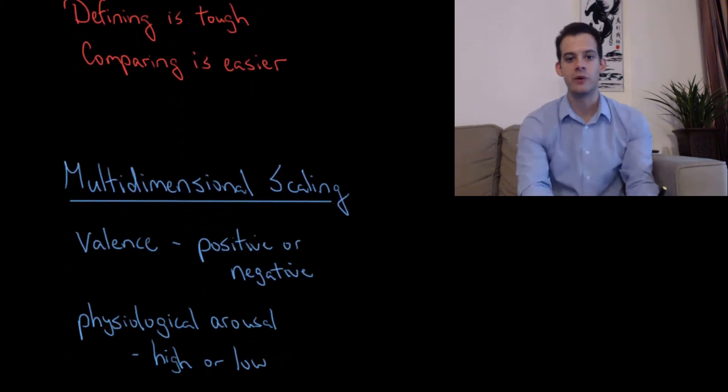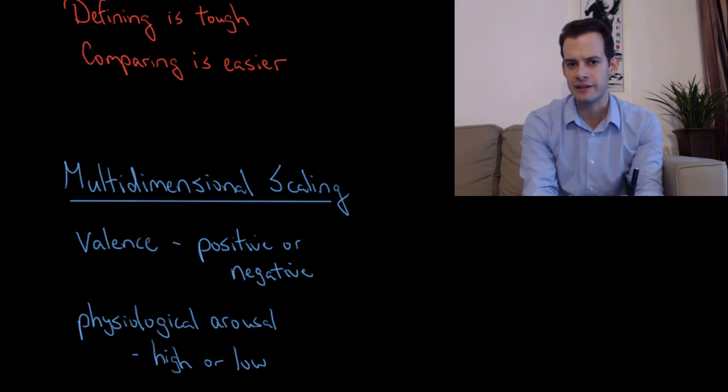So what we're doing is we're thinking about two different dimensions for comparing emotions, and then by sort of plotting out where the emotions would fall on those dimensions, we sort of have this map of where different emotions are. And so even though we might not have the perfect operational definition of something like happiness, we can say okay well compared to other emotions happiness is somewhere around here.